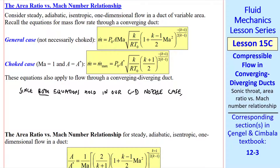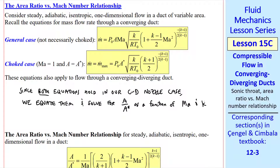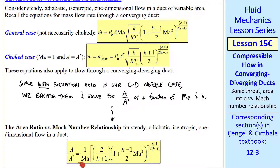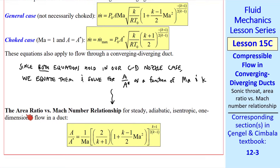Since both equations hold in our CD nozzle case, we equate them — set the right-hand sides equal — and solve for A over A-star, the area ratio, as a function of Mach number and k, the ratio of specific heats. After a little bit of algebra, we solve for A over A-star and get this area ratio versus Mach number relationship. This is a workhorse equation for duct flows.